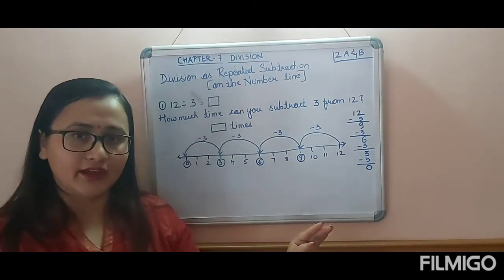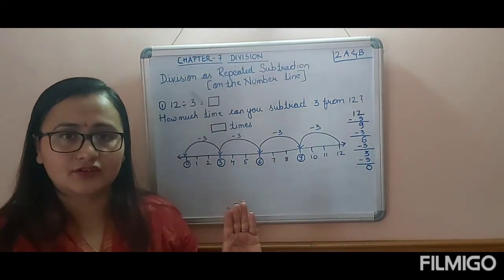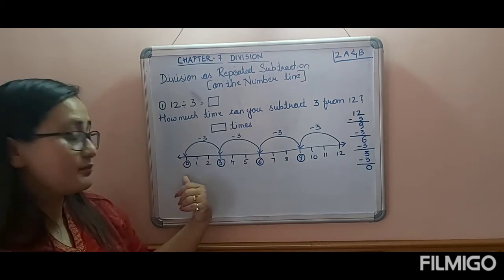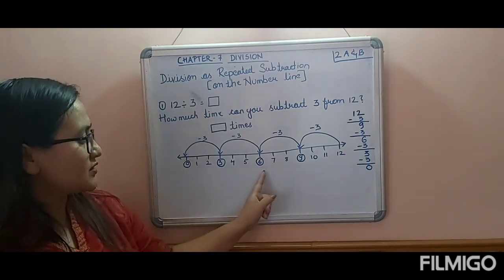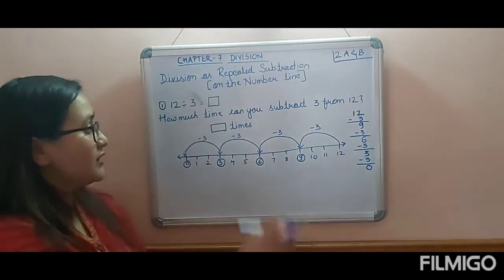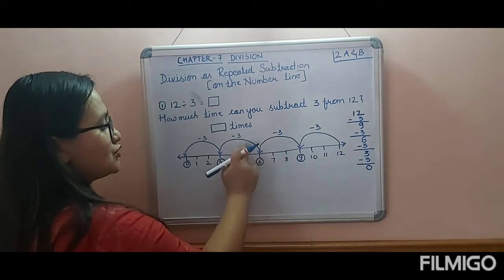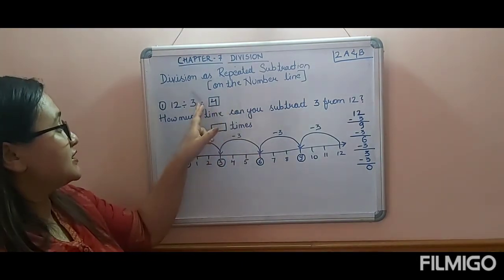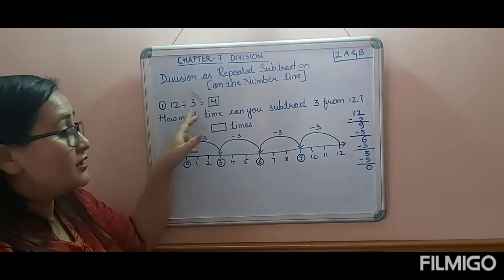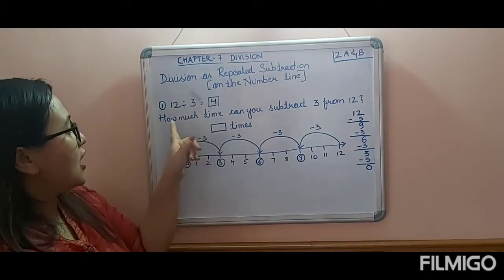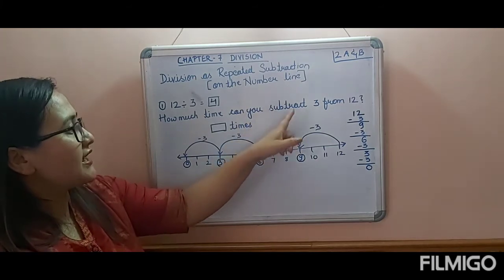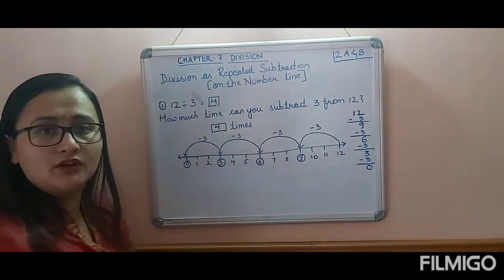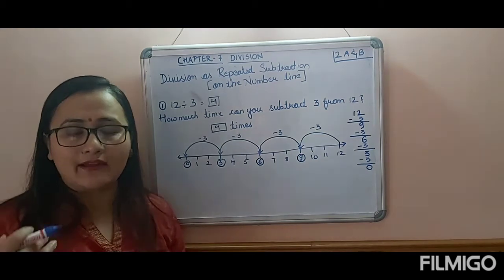So that is repeated subtraction. Now count how many times you jumped: 1, 2, 3, 4 — four times. If you check the multiplication table: 3 times 4 is 12. So 12 divided by 3 equals 4. You can subtract 3 from 12 exactly four times.